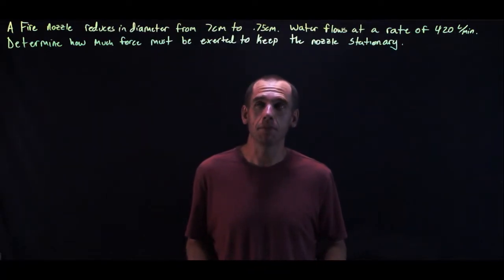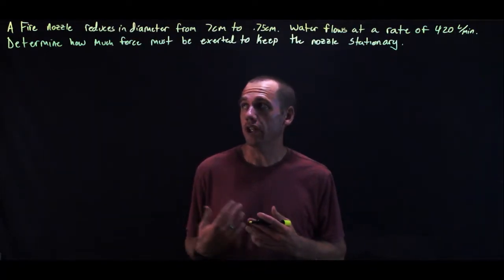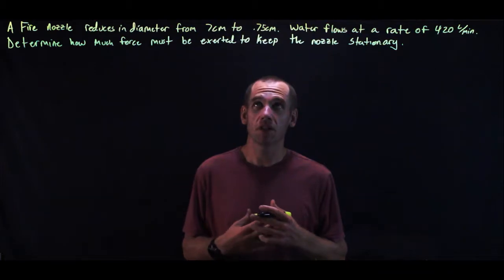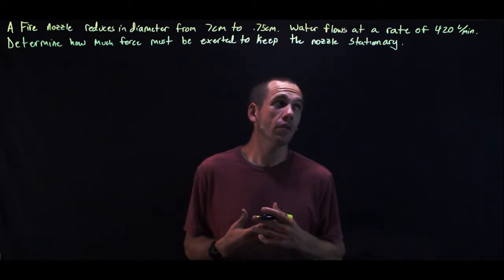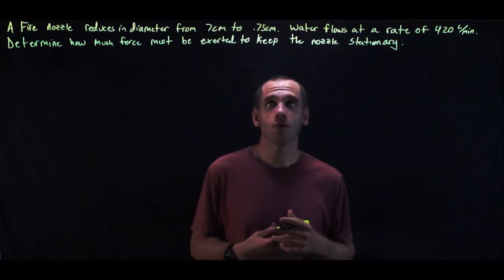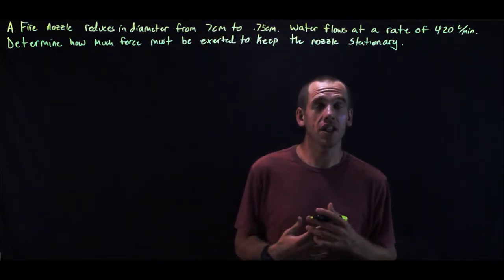We're going to look at an example problem. This one is a little bit tricky. A fire nozzle reduces in diameter from 7 centimeters to 0.75 centimeters. Water flows at a rate of 420 liters per minute. Determine how much force must be exerted to keep the nozzle stationary.